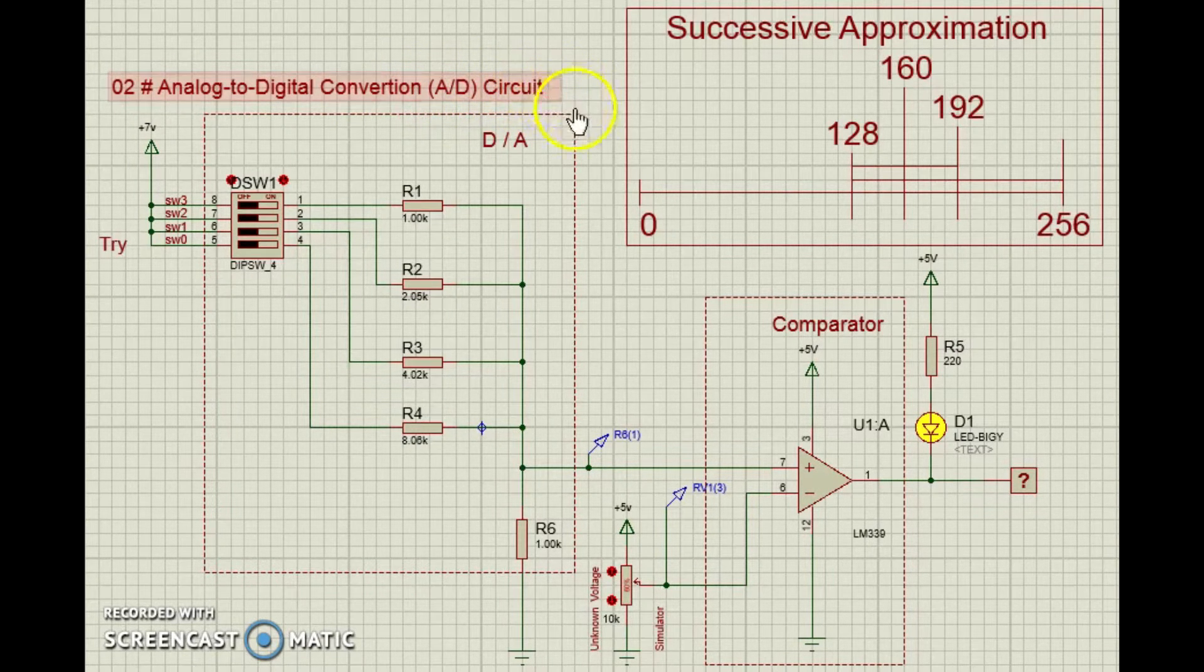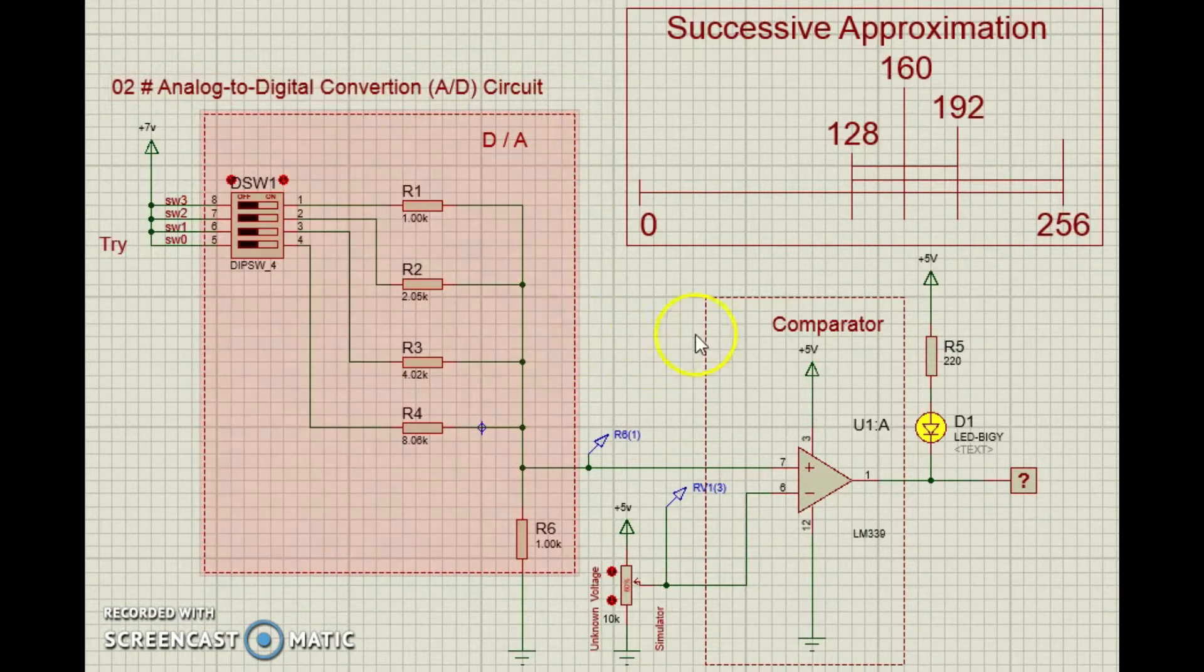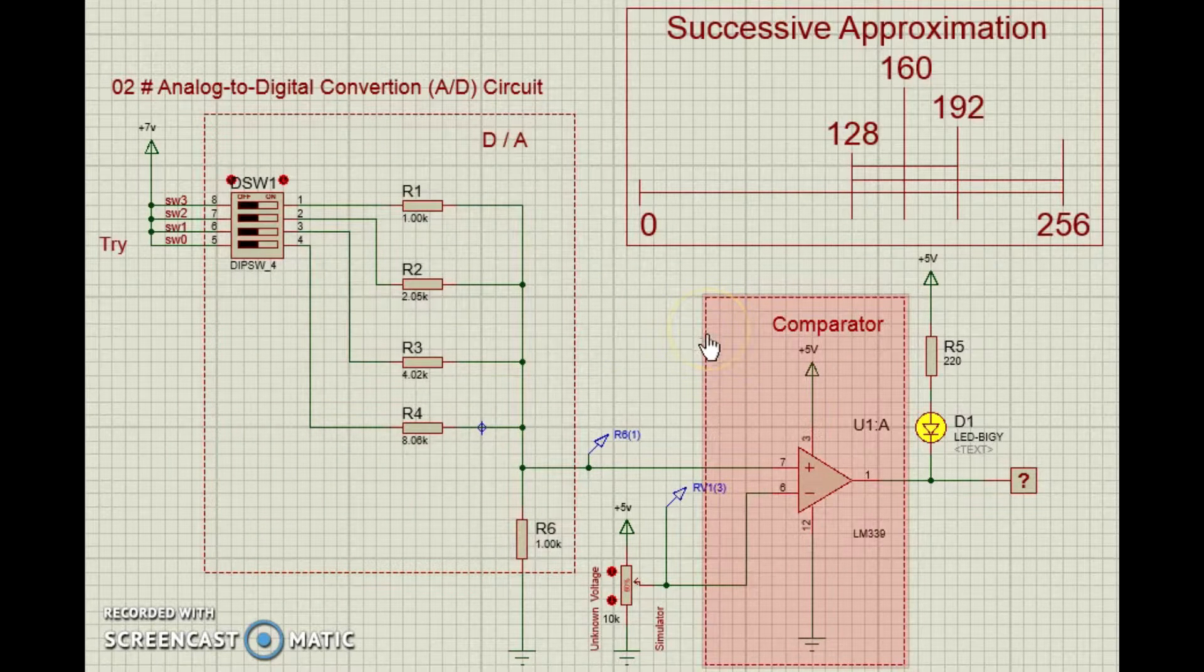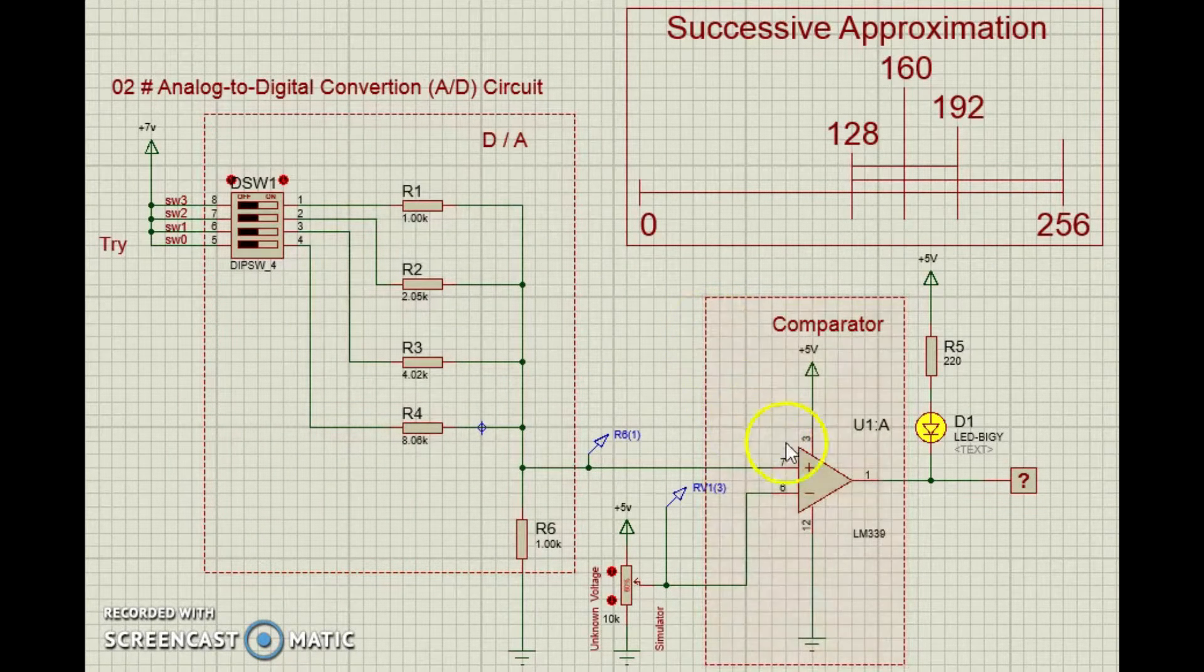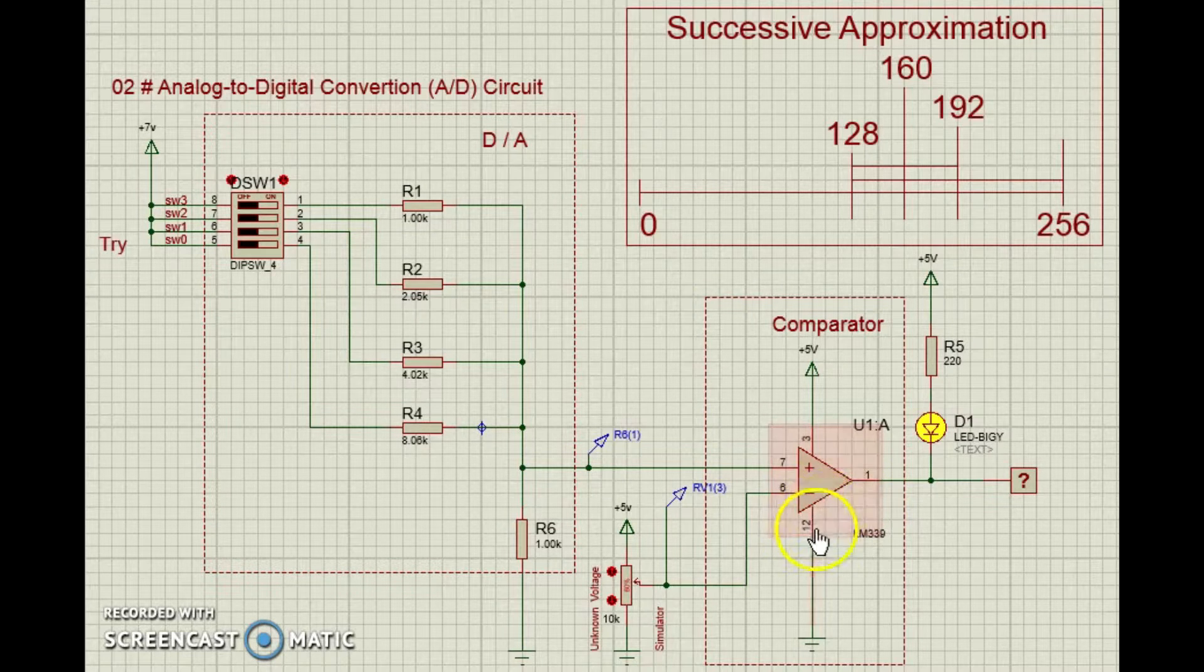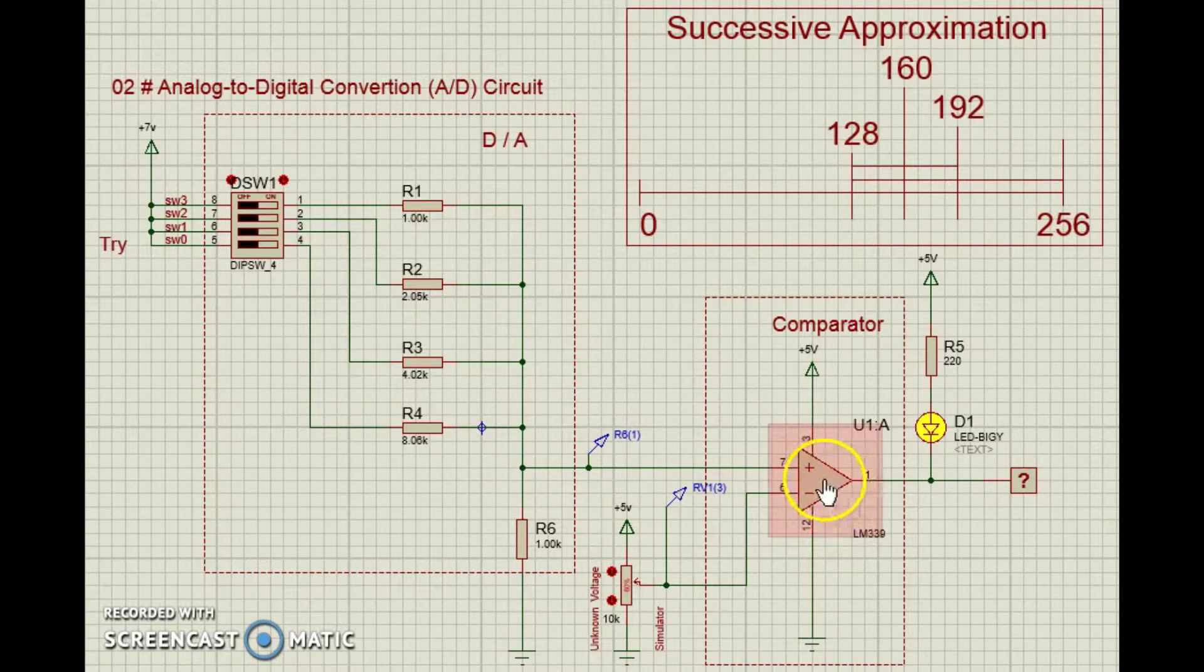You need a DA along with a circuit known as a comparator. A comparator is simply an amplifier with a very high gain.